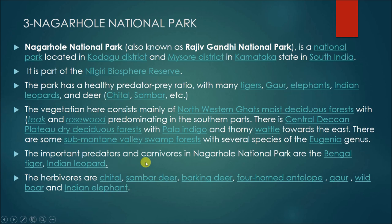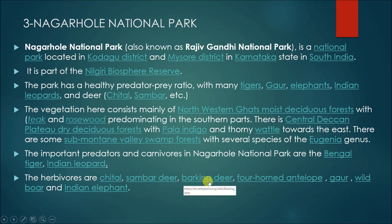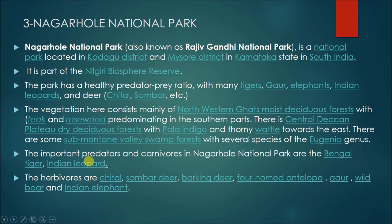The most important predators of Nagarhole National Park are Bengal tiger and Indian leopard. Herbivores include sambar deer, barking deer, four-horned antelope, wild boar, and Indian elephant.